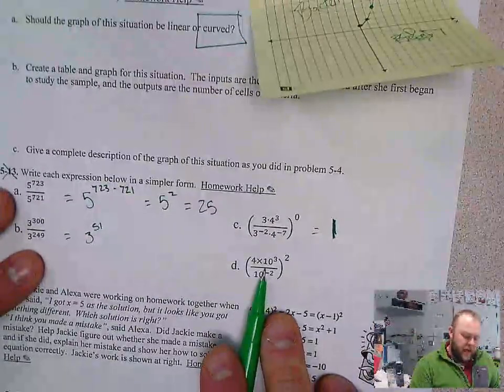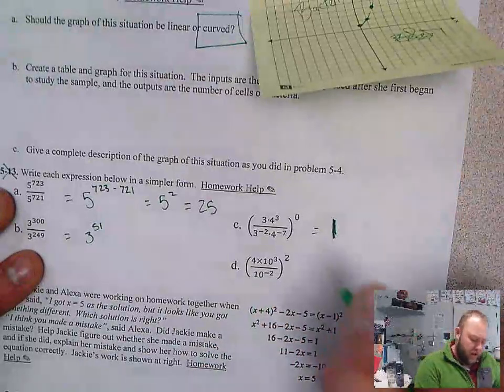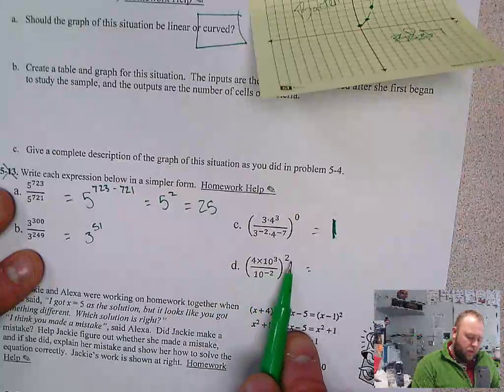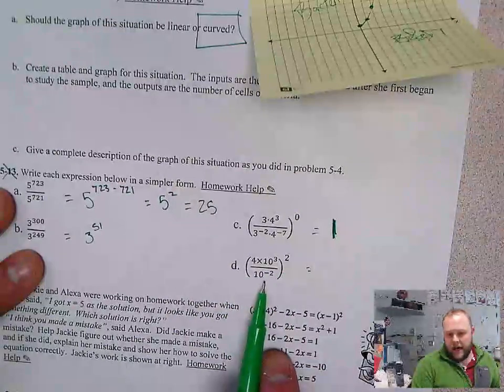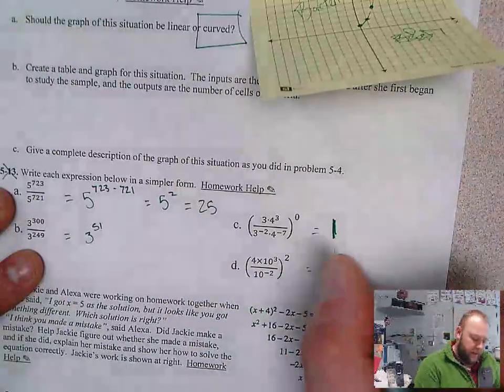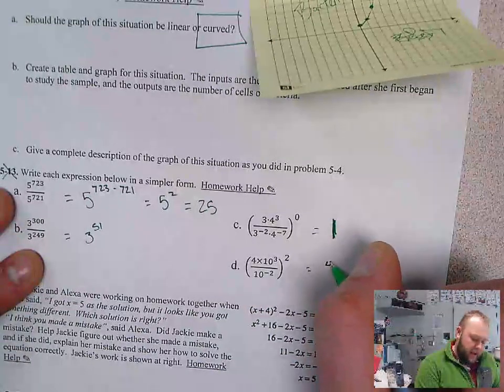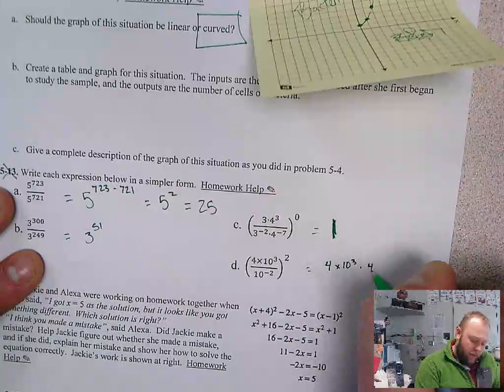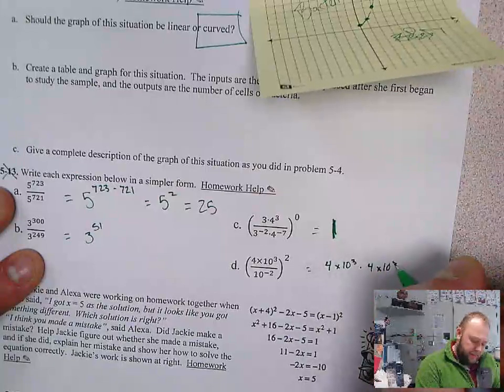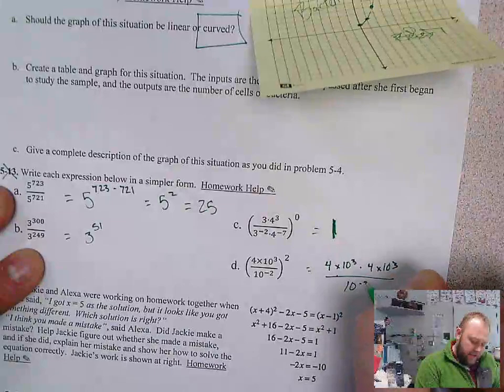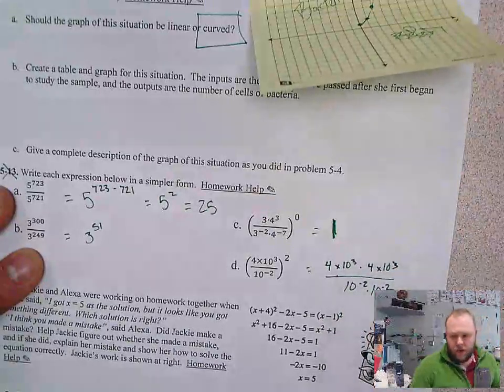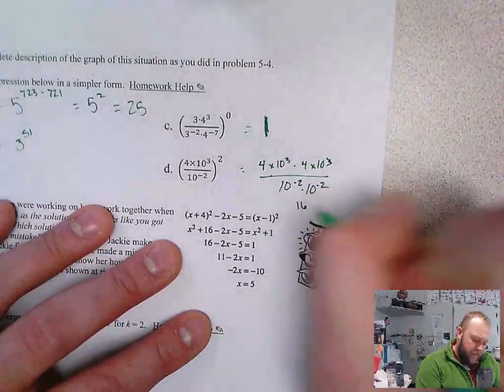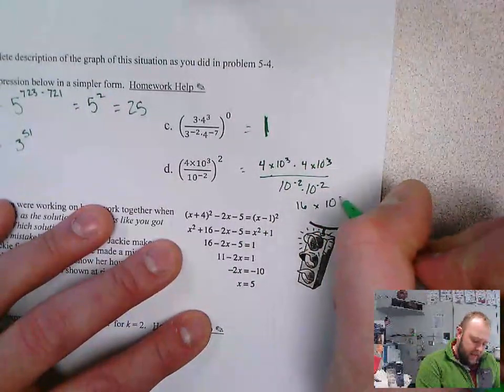Last up, we've got scientific notation. So let's break this down. I've got 4 times 10 to the third squared and 10 to the negative second that I'm dividing by. So that's going to be 4 times 10 to the third times 4 times 10 to the third over 10 to the negative 2 times 10 to the negative 2. When I rewrite this, 4 times 4 is 16 times 10 to the sixth.